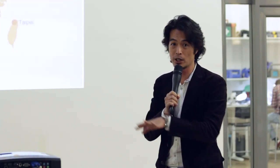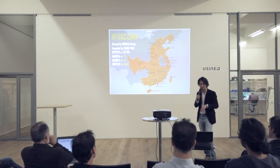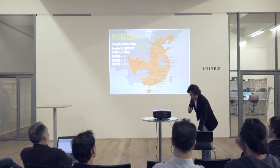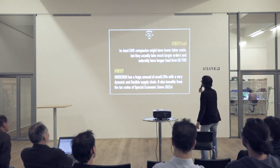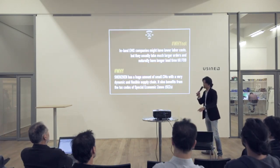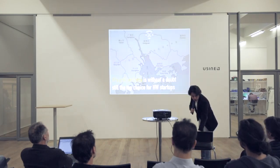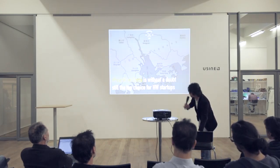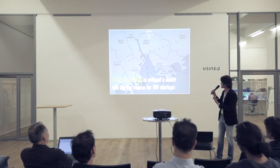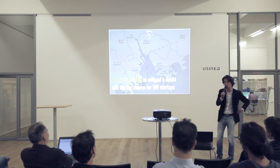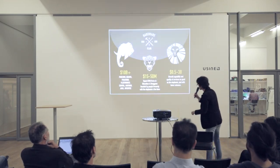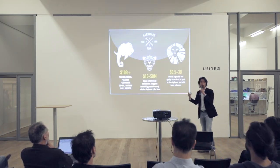What does that mean? It means this is a volume business with very low margins. It doesn't matter if you're the most popular manufacturer — you're not going to get Foxconn until you have the volume. The Pearl River Delta is still without a doubt the top choice for hardware startups.